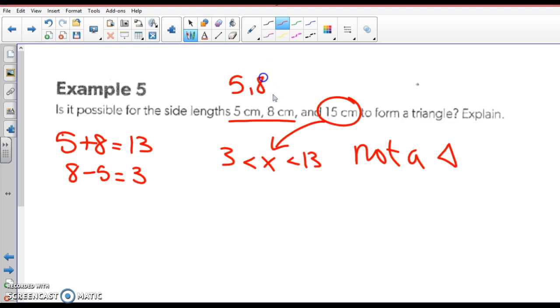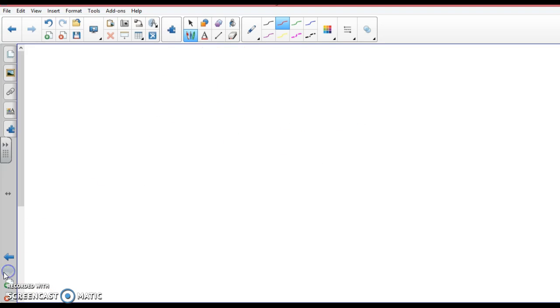Now, if I had 5, 8, and 7, is 7 in between these two? Yes, it is. This would be yes, a triangle. What if I gave you this one? 5, 8, and 13. Well, is 13 in between these two numbers? No, it has to be less than 13. So not a triangle. If that was 12.9, it would work.